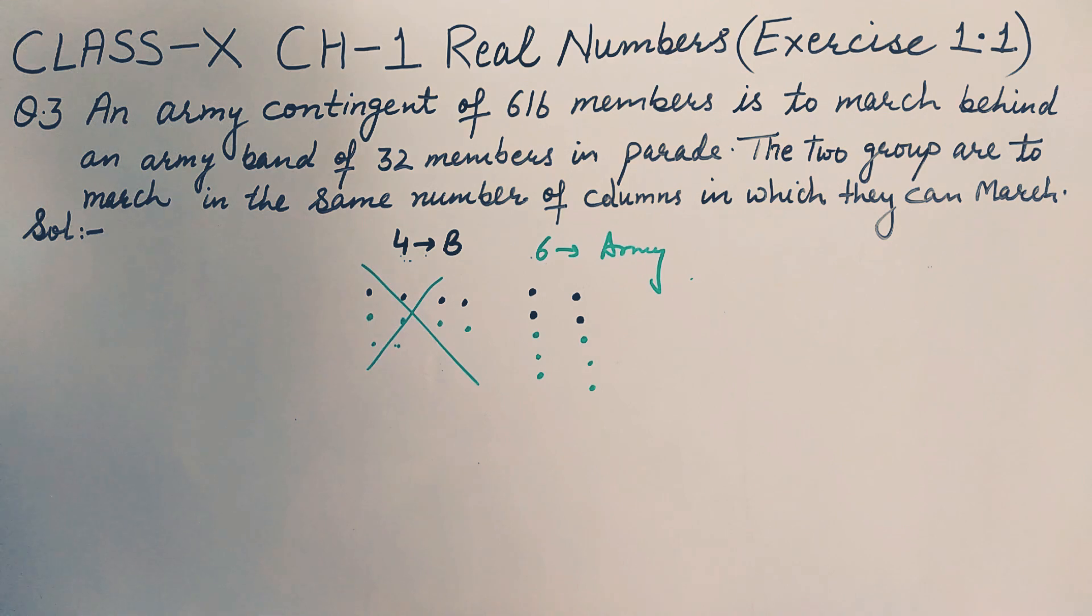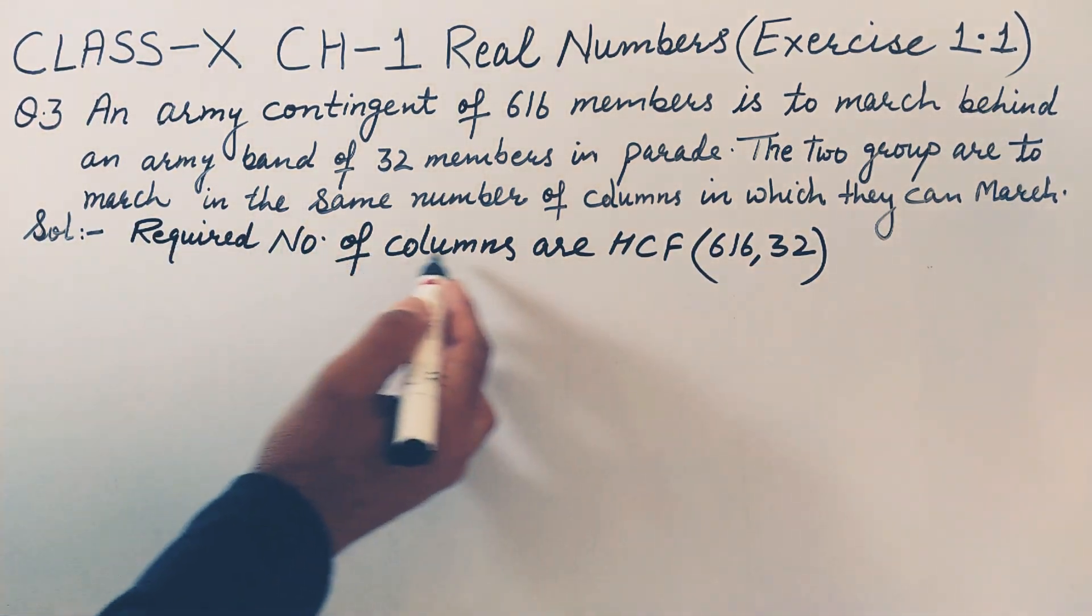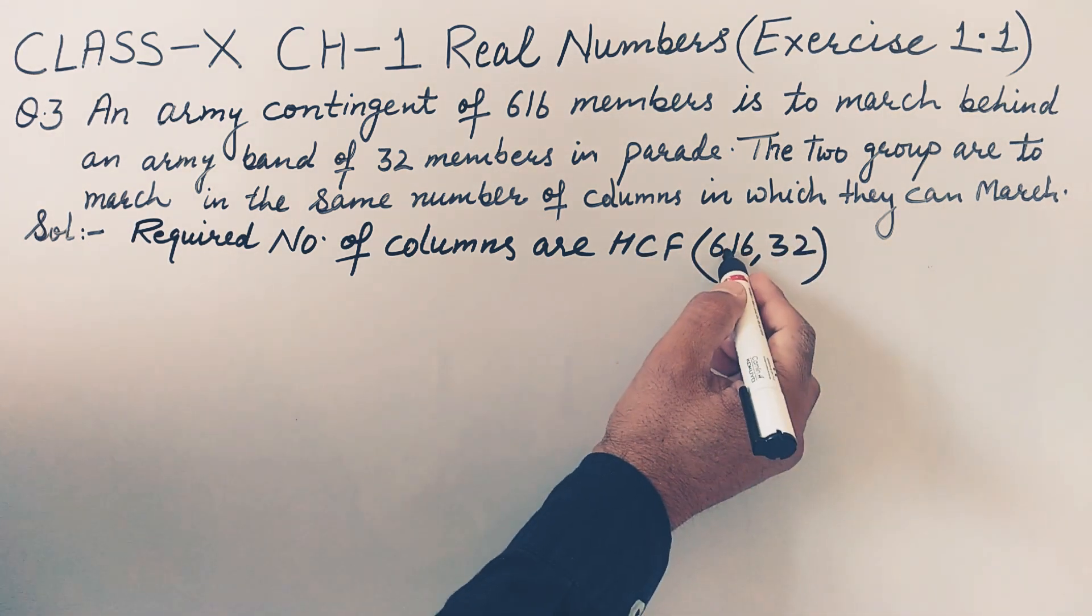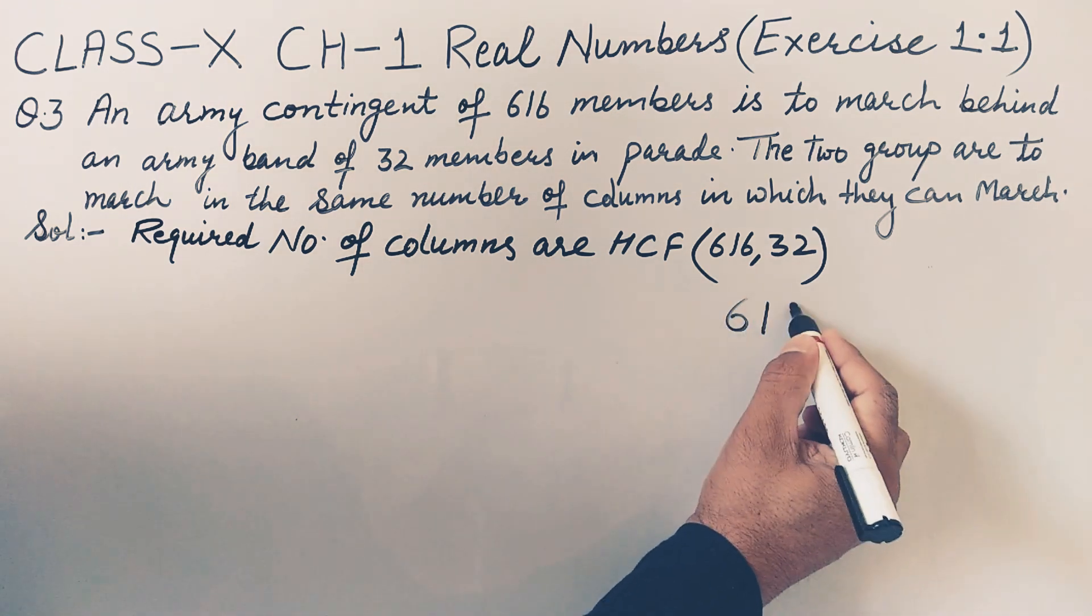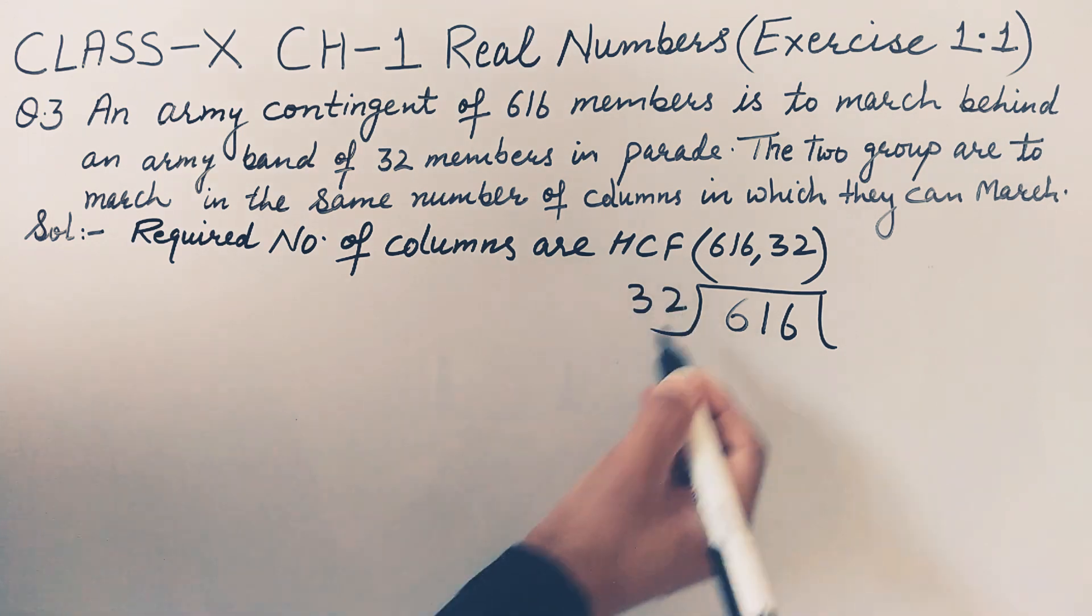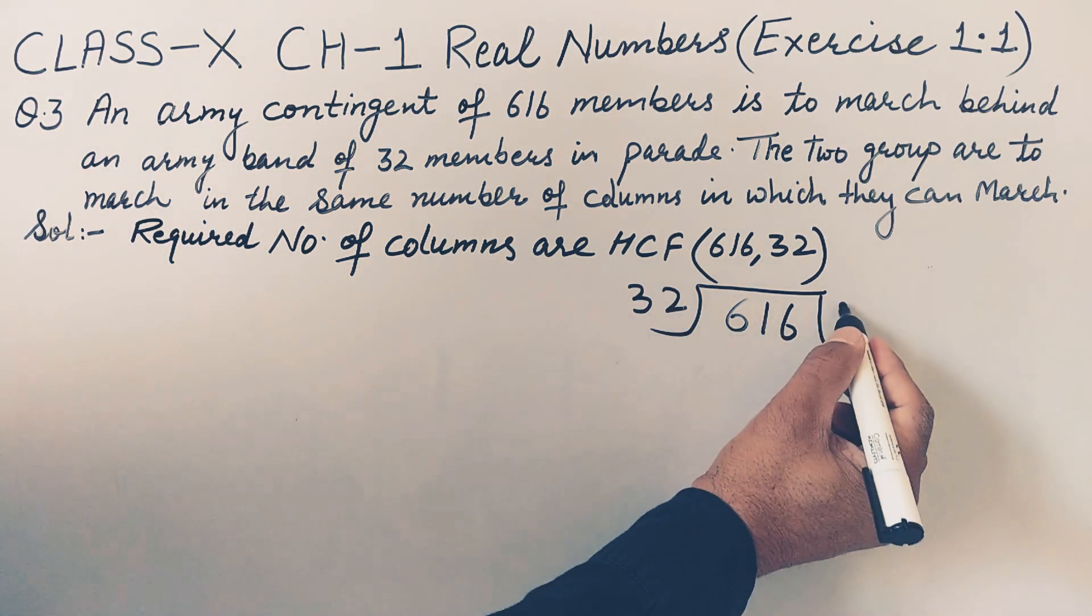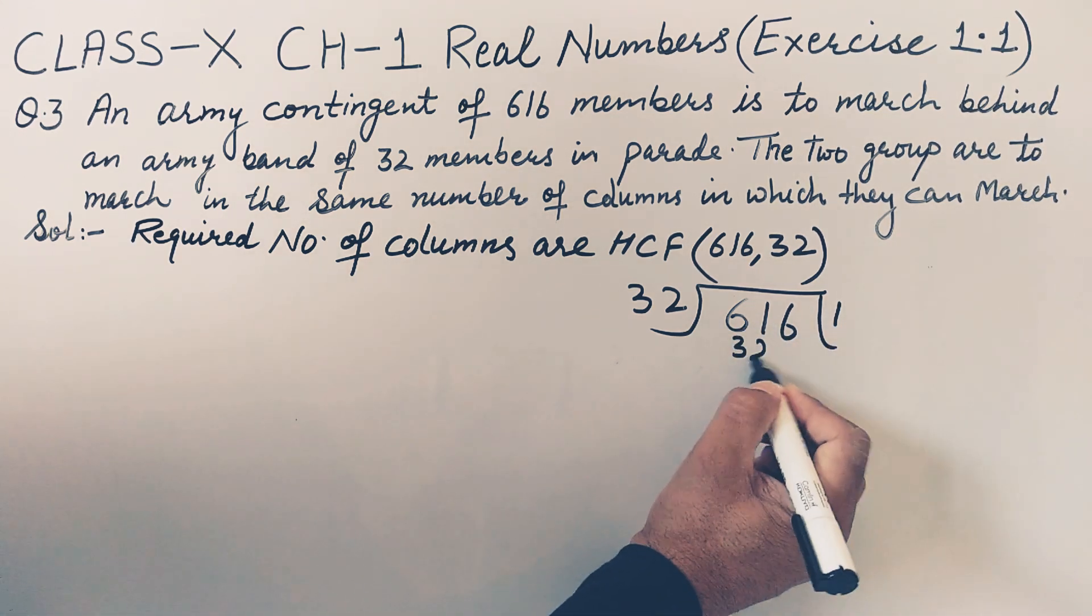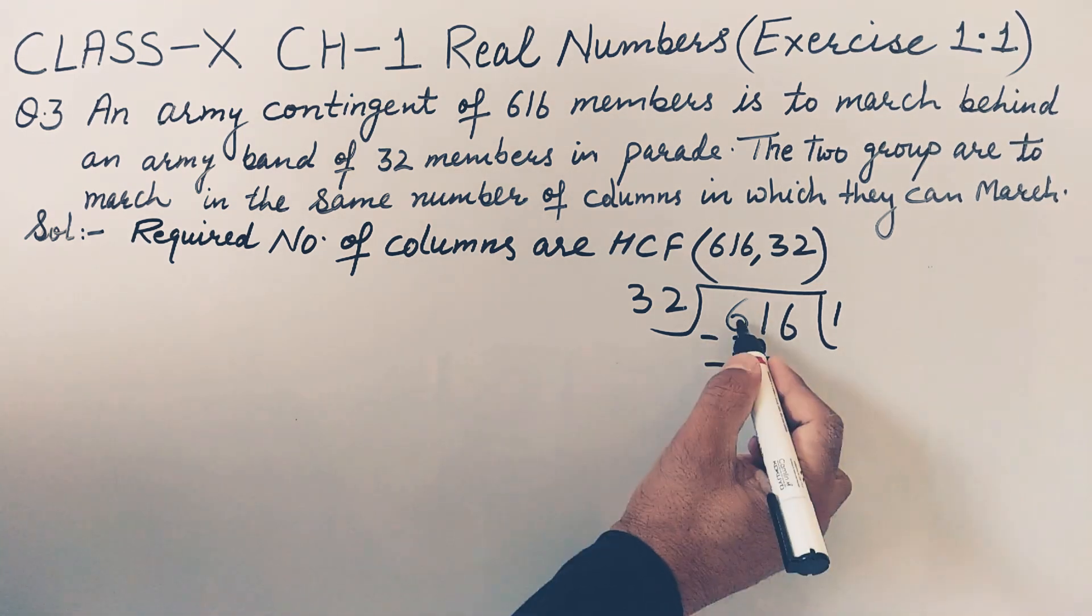Let's find the HCF of these two. I've written required number of columns are HCF of 616 and 32. Here bigger is 616 so I'll write 616 as a dividend and 32 as a divisor. This is 61, so 32 ones are 32, 32 to 64 will be bigger, so it is going with one. 32 ones are 32, now minus it. 11 minus 2 is 9 and 5 minus 3 is 2.